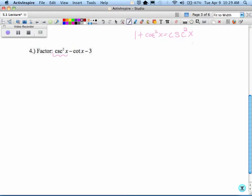So cosecant squared, I'm going to change that to 1 plus cotangent squared of x. I still have minus cotangent of x and minus 3. So that's the only substitution that I made.